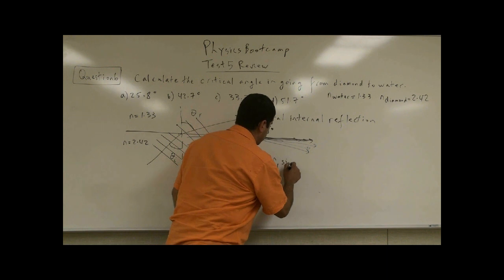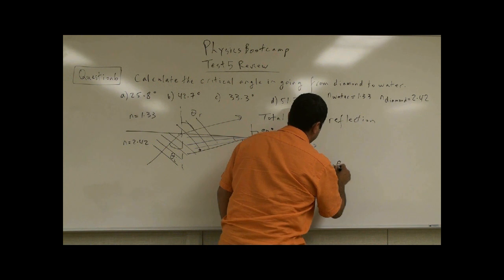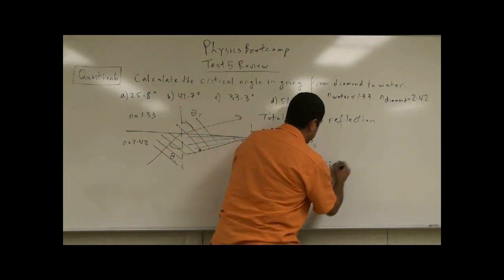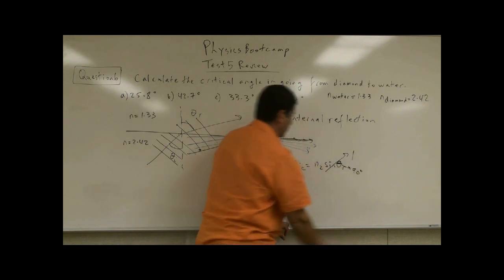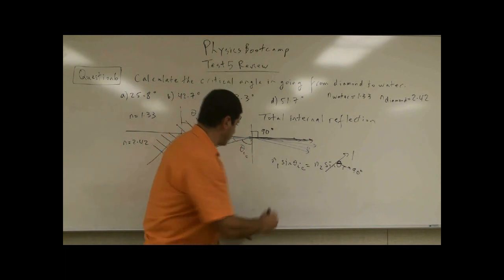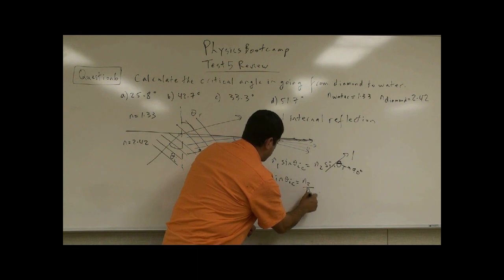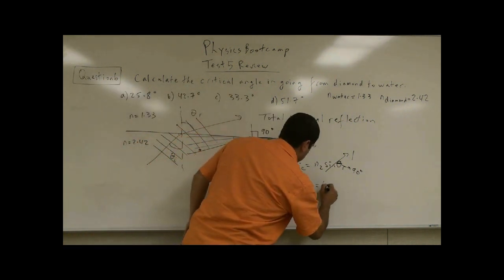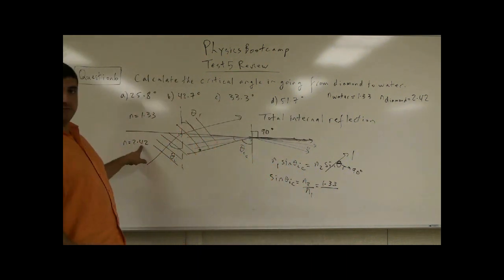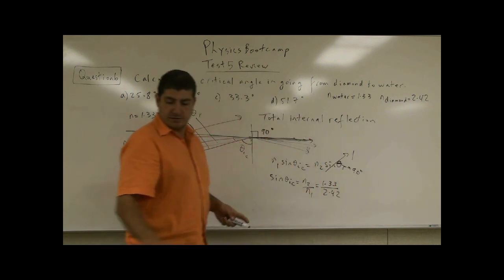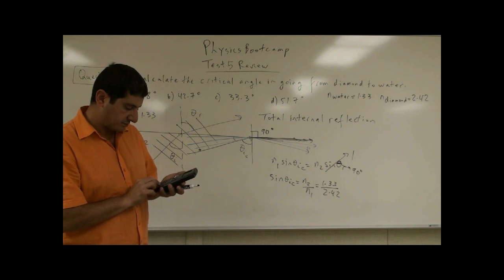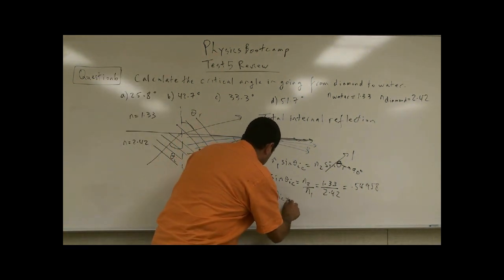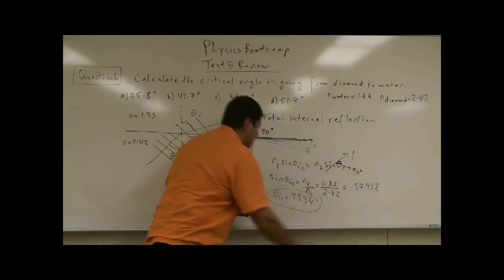Using Snell's law: N1 × sin(θ_incident_critical) = N2 × sin(θ_refracted). We set θ_refracted = 90°, so sin(90°) = 1. Therefore, sin(θ_incident_critical) = N2 / N1. The index of refraction of the lighter medium goes in the numerator. So we take 1.33 divided by 2.42 and take the inverse sine of that, which gives us approximately 33.34 degrees — so about 33 degrees.